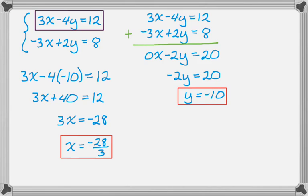Now I know the system has a solution: x equals negative 28 thirds, y equals negative 10, or as an ordered pair, (negative 28 thirds, negative 10).